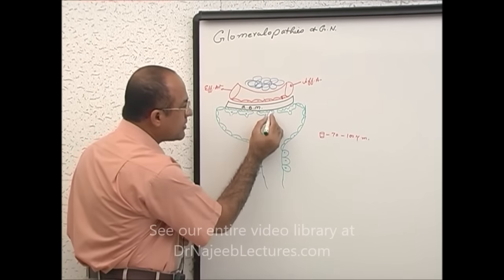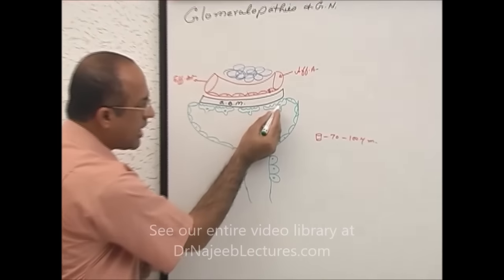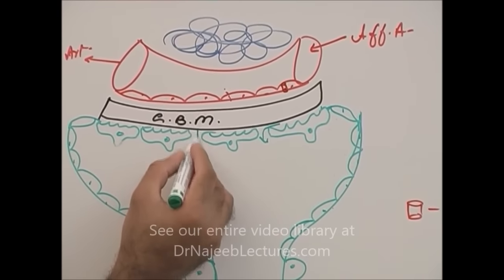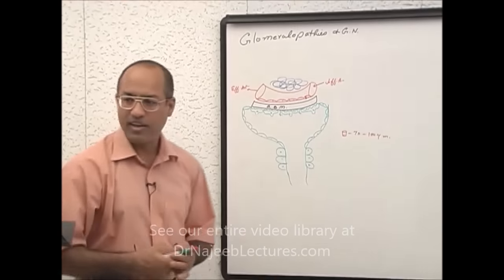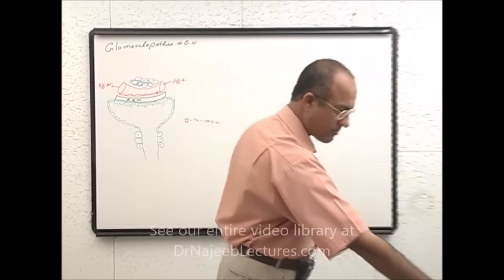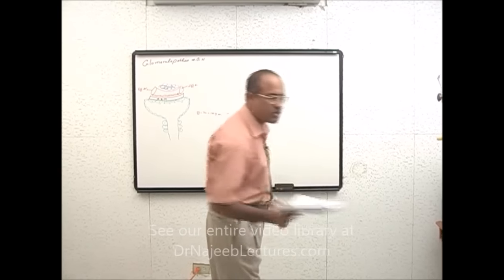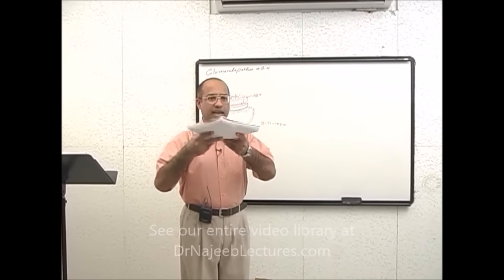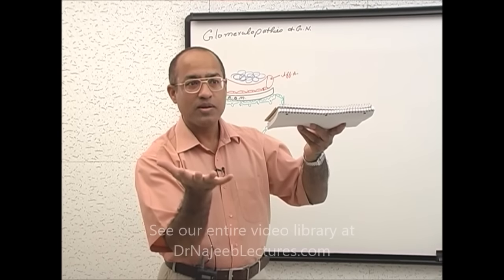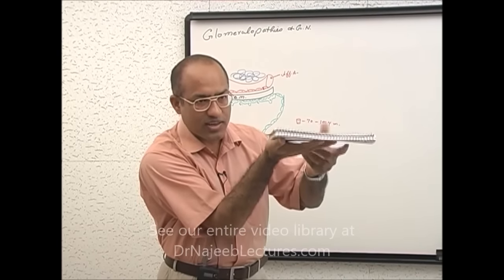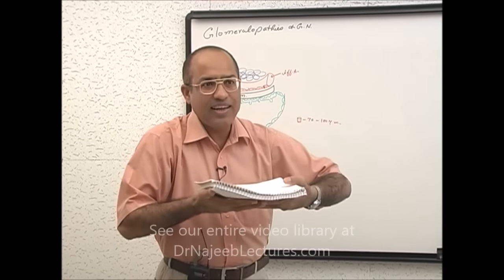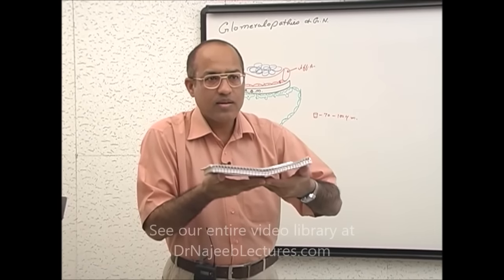On the epithelial cell side there are filtration slits. Let me explain: this is the glomerular basement membrane, and the podocytes are applied on it. Between one podocyte and another, they will interdigitate their foot processes. Under the glomerular basement membrane, you have podocytes interdigitating — with their foot processes sticking to the glomerular basement membrane.